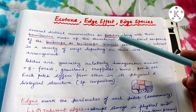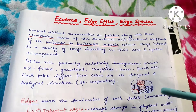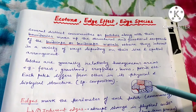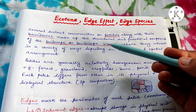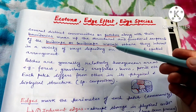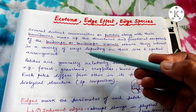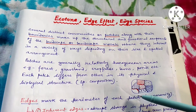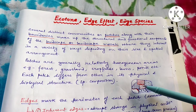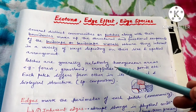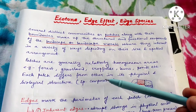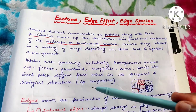Several distinct communities or patches, along with their boundaries — obviously each patch has a boundary — make up the structural and functional component of the landscape mosaic, where they interact in a variety of ways depending on their size and spatial arrangement. Patches are generally homogeneous areas like forest, grassland, cropfield, lawn, ponds, etc., and each patch differs from others in its physical and biological structure.